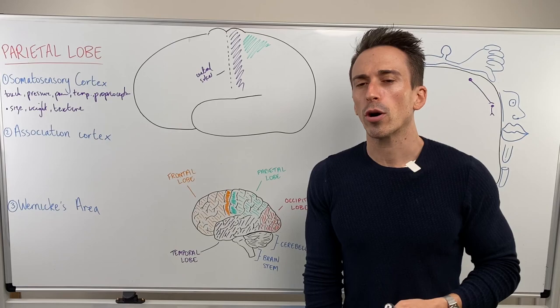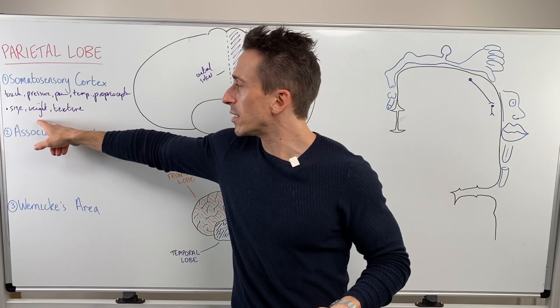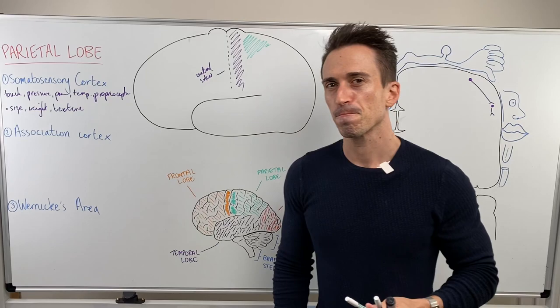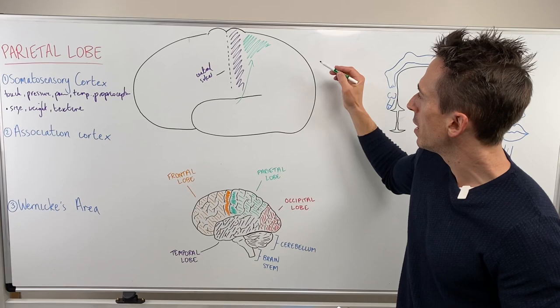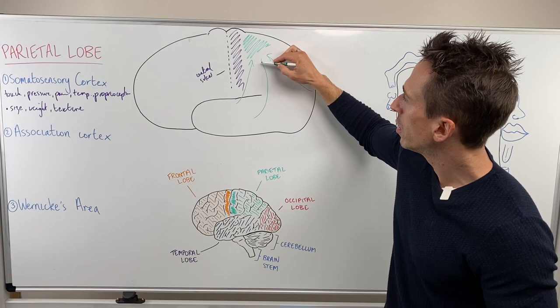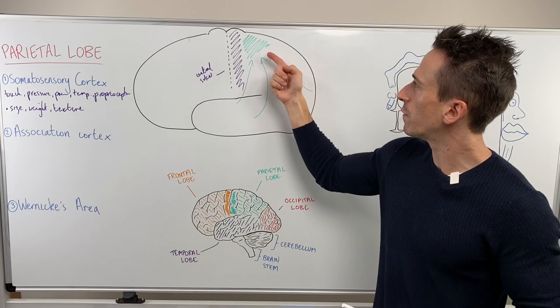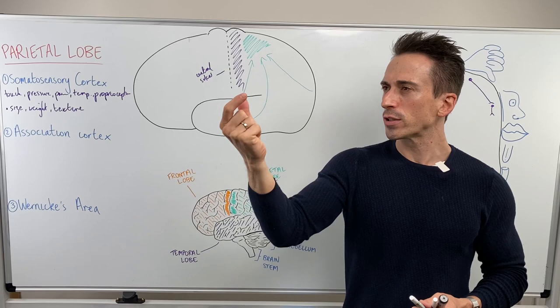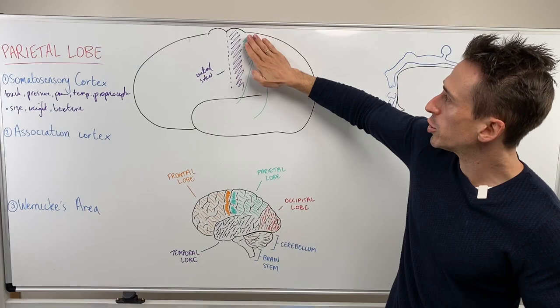What the association cortex does — similar to the association cortex of the motor cortex — is it brings in information from other areas of the brain and previous experience to tell you exactly what's happening. For example, I put my hand in my pocket and there's a coin. I feel its touch, temperature, size, weight, and texture — all going to the primary somatosensory cortex, but I don't know it's a coin yet. The association cortex takes information from the thalamus, the visual cortex, the auditory cortex, and other areas to tell me what the object is. If I take it out and look at it, visual information comes in, past experience tells me I've felt and seen something like this before — this is a coin. That's what the association cortex does: it allows you to identify that object.